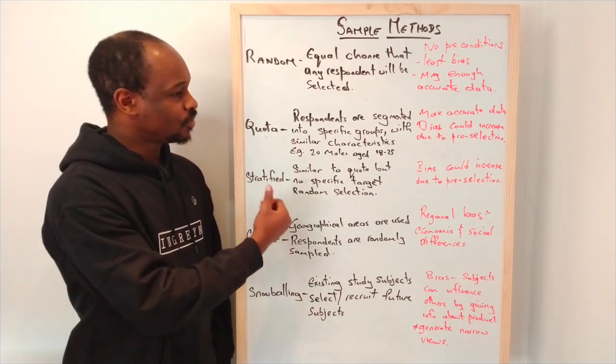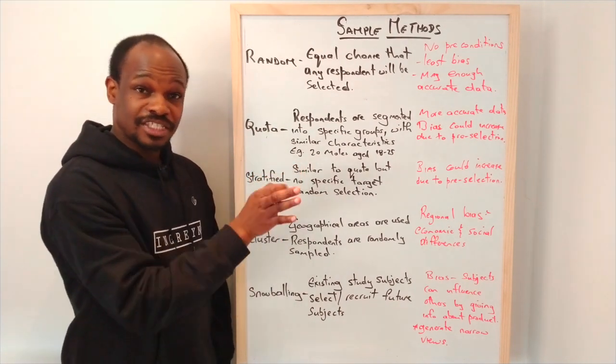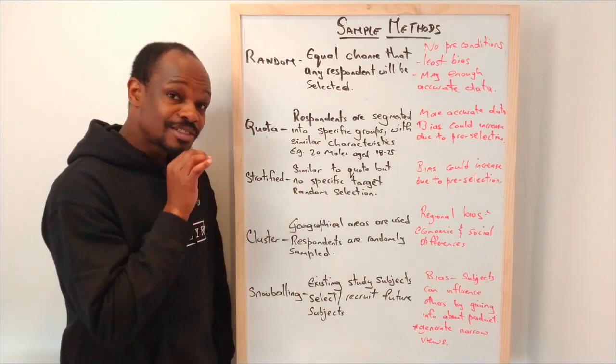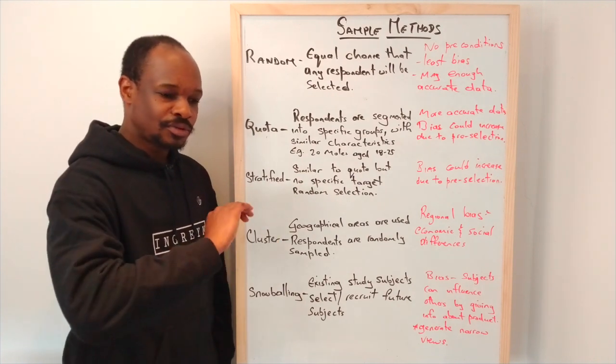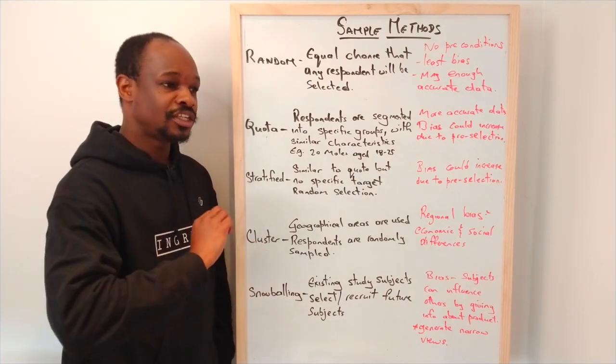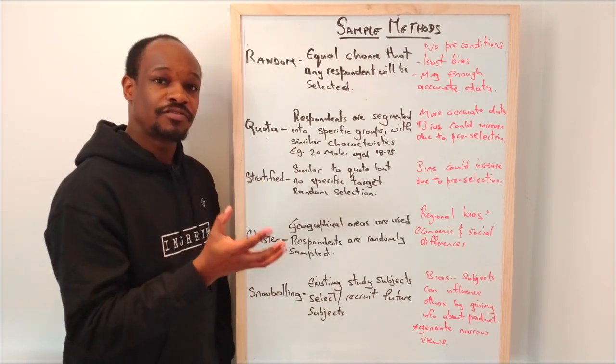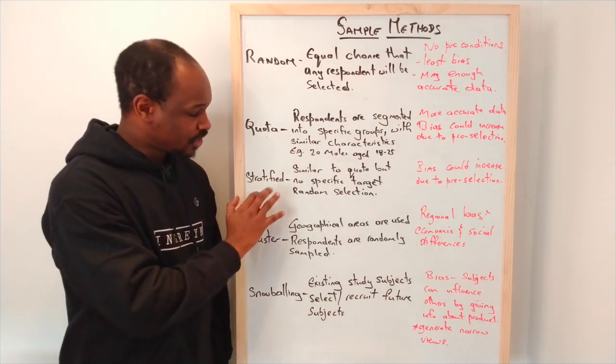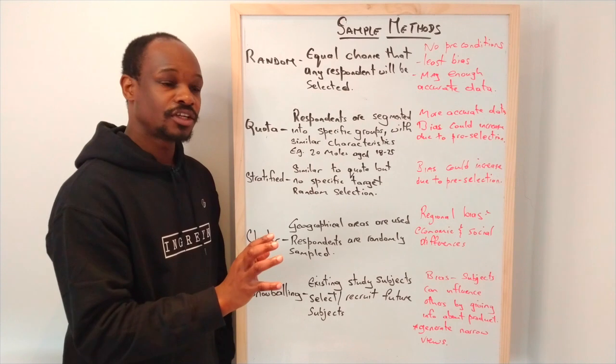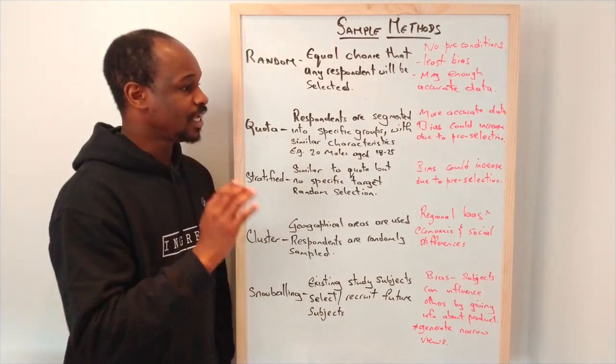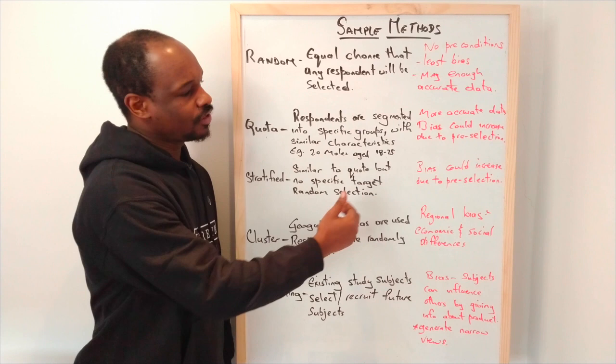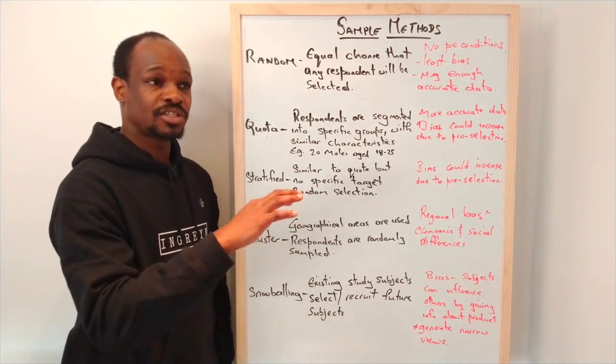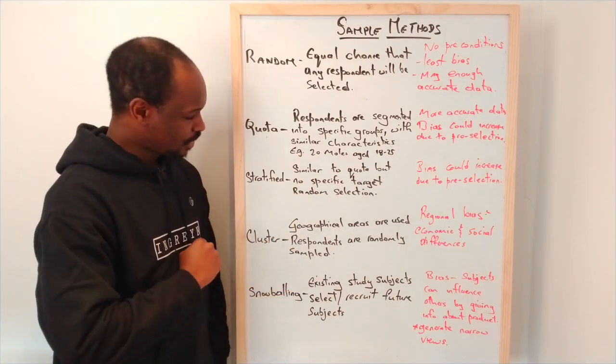That's the difference between stratified and quota. One is segmented with a specific target group, whereas stratified is segmented but not a specific target group. You have a special group but then you randomly select from it. For stratified you might have 50 males and you just choose randomly from it. For quota, 50 males but we're only looking for those who are from 18 to 25. The bias could increase due to pre-selection.